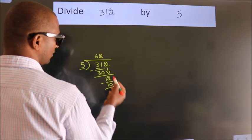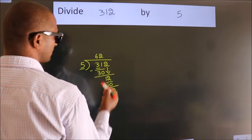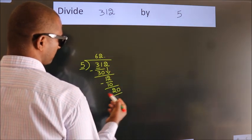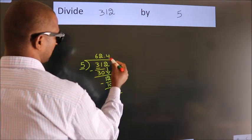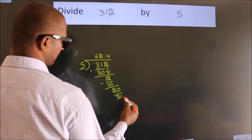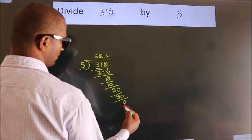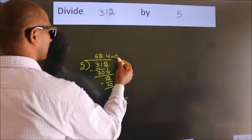After this, no more numbers to bring it down. So what we do is, we put dot take 0. So 20. When do we get 20? In 5 table. 5 fours 20. Now, we subtract. We get 0. We got remainder 0. So this is our quotient.